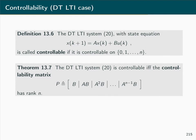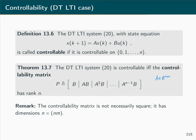Theorem 13.7 gives the first controllability result for discrete time linear time invariant systems. We define the controllability matrix, denoted P, whose columns consist of B, AB, A²B, ..., Aⁿ⁻¹B in sequence. The result states that the system is controllable if and only if this controllability matrix has rank n. Since A is n×n and B is n×m, the controllability matrix has dimensions n×(nm) and is not necessarily square.